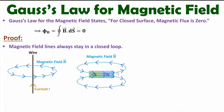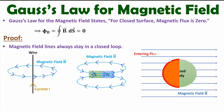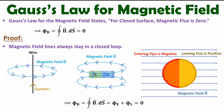Let me give you more clarity. If you observe, we have magnetic field lines and we place one closed surface over here. On this side, magnetic field lines are entering the body — that is entering flux, which is negative. An equal amount of flux is leaving from the other side — that is leaving flux, which is positive. We have equal entering and equal leaving flux, so the total flux is zero.